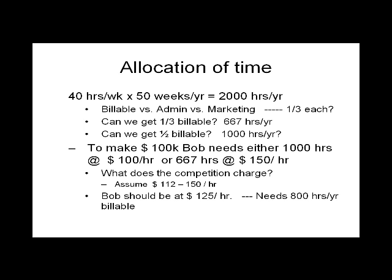Can we do all of this one-third each? Maybe we can do a little bit less in marketing and a little bit less in administration, and get about 1,000 hours — half of our time — billable per year. In order to make $100,000, we need either 1,000 hours at $100 an hour, or if only a third of our time is billable, 667 hours at $150 an hour.